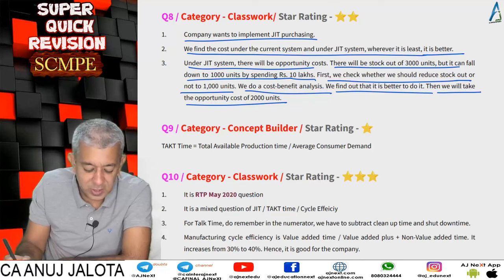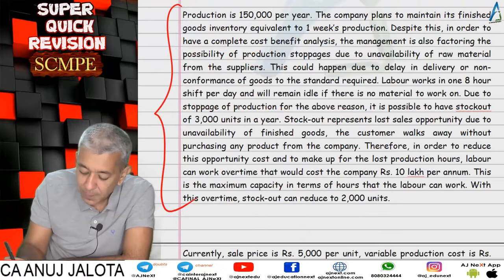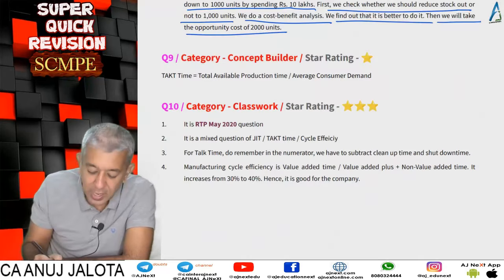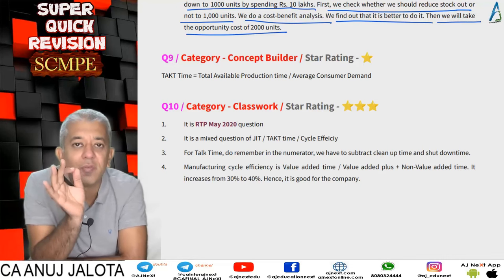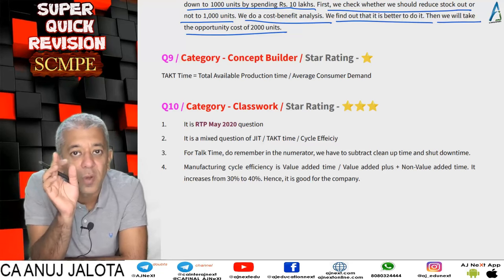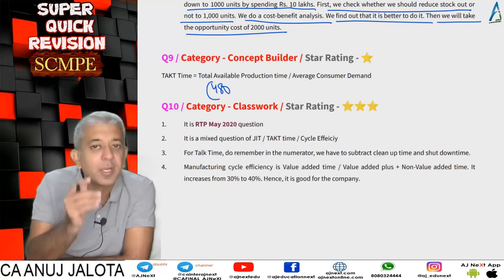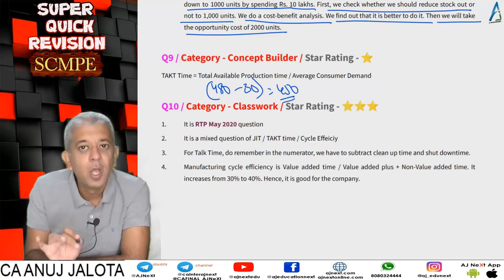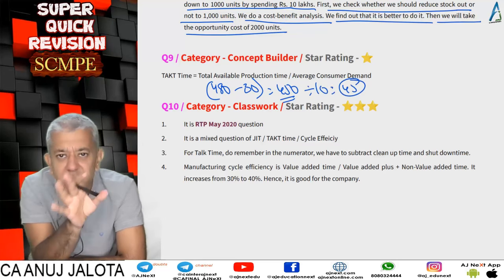Question 9 was mainly about takt time. Takt time is the available production time divided by demand — it tells you how much time you have to produce one unit. For example, if a factory works for 480 minutes (8 hours) a day with a 30-minute lunch break, then 450 minutes are available. With an average demand of 10 units, takt time = 450 / 10 = 45 minutes per unit.